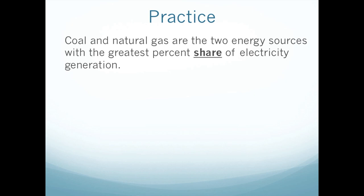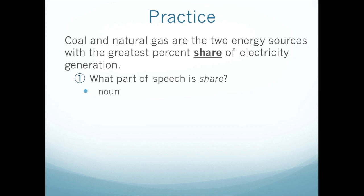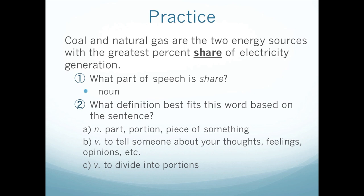Let's try another one. This is the same sentence from earlier, but we're going to look at a different word: Coal and natural gas are the two energy sources with the greatest percent share of electricity generation. We're looking at the word share. What part of speech is it? If you said noun, you're correct. You probably know that share is a verb, but here we're not using it as a verb — it's actually used as a noun. Which definition best describes it? A is a noun, B is a verb, C is a verb. We know it's a noun, so it cannot be B or C — to tell or to divide — those are both verbs. So the only possible answer is A, which is a noun that means part, portion, or piece of something.